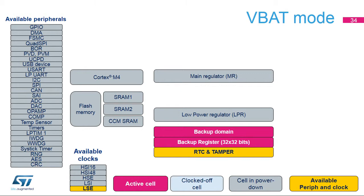In VBAT mode, the main regulator and the low-power regulator are powered down. The RTC and tamper clocked by the external low-speed oscillator can remain active. Only the external low-speed clock can be enabled. The only powered block is the backup domain that includes RTC and tampers, and the return to normal execution happens once VDD supply is provided. The VBAT consumption with RTC is around 150 nanoamps typical at 1.8 V.